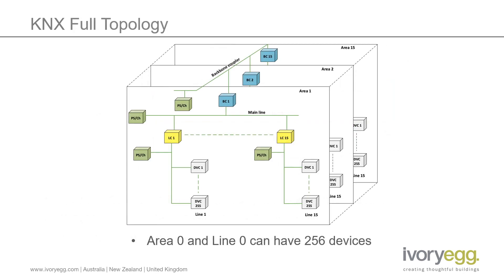Another aspect this changes is the number of devices on line zero and area zero. Previously, this was limited to 64 devices as you weren't able to have line repeaters on these system lines, but that restriction has been removed. You can now have 256 devices on these lines, which increases the total number of devices possible in a KNX installation to 61,696.